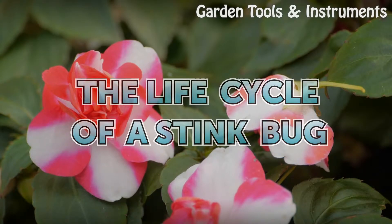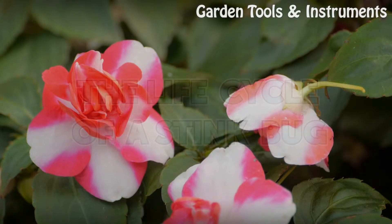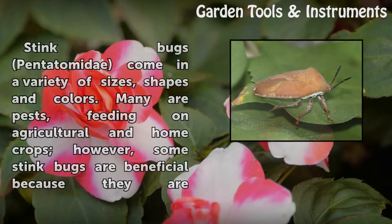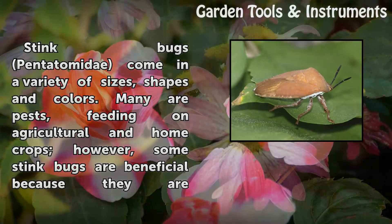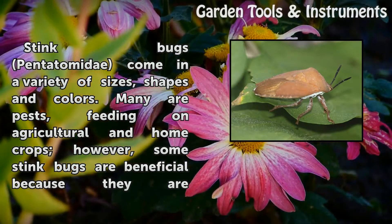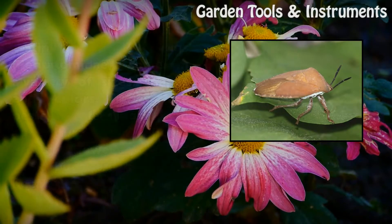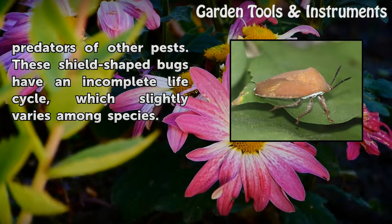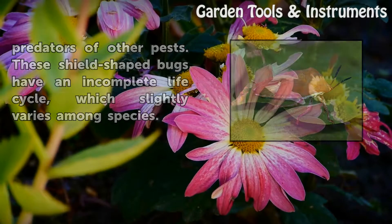The Life Cycle of a Stink Bug. Stinkbugs, Pentatomidae, come in a variety of sizes, shapes, and colors. Many are pests, feeding on agricultural and home crops. However, some stink bugs are beneficial because they are predators of other pests. These shield-shaped bugs have an incomplete life cycle, which slightly varies among species.